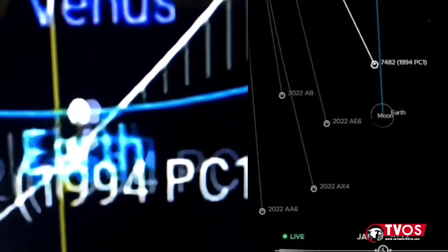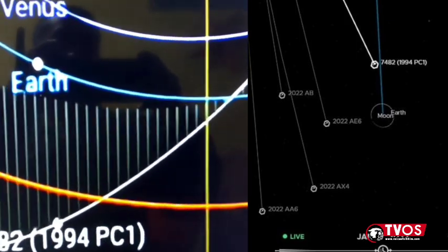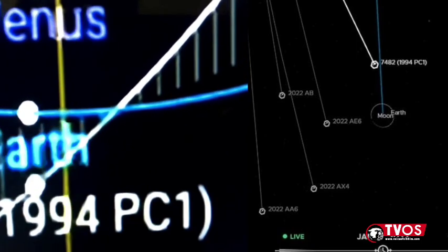Asteroid 7482-1994 PC-1 flew by Earth around 4:51 PM, according to NASA, which has been tracking the object for decades through its planetary defense systems.